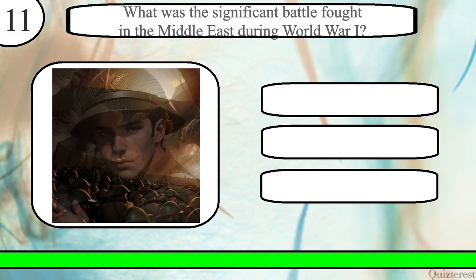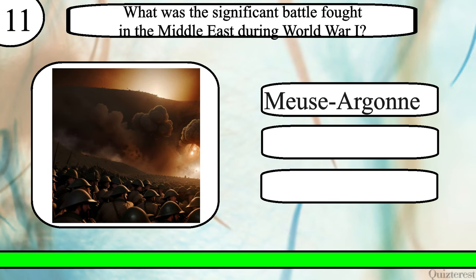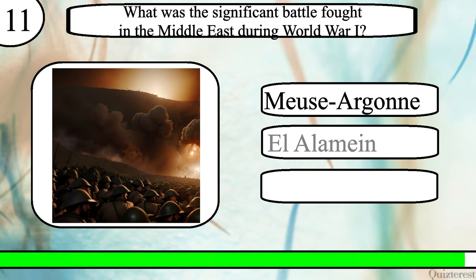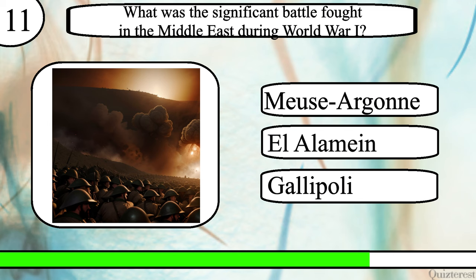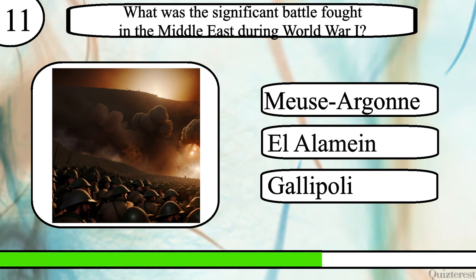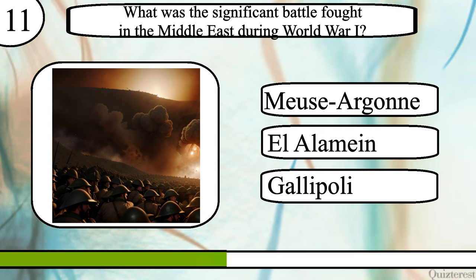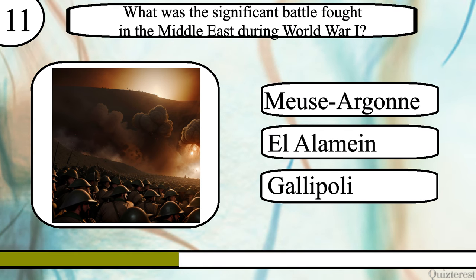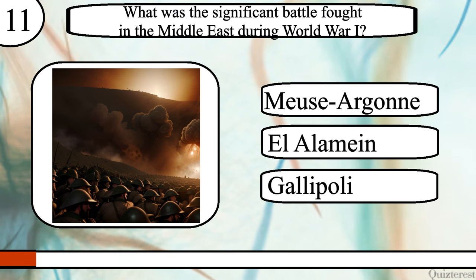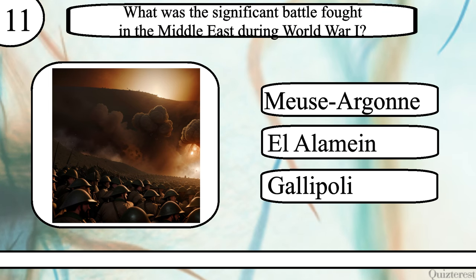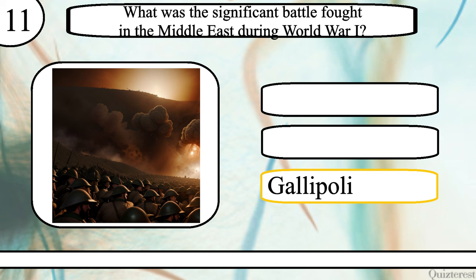Question 11. What was the significant battle fought in the Middle East during World War I? Meuse-Argonne, El Alamein or Gallipoli? The correct answer is Gallipoli.